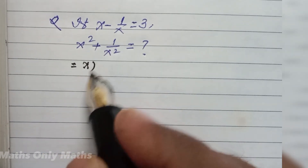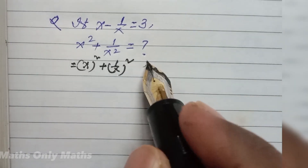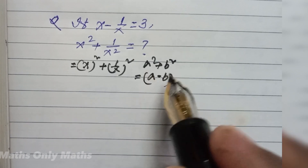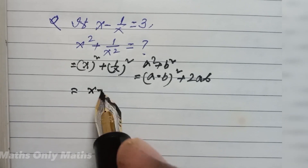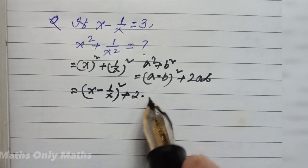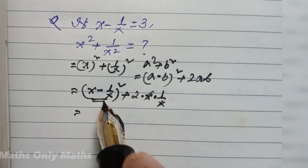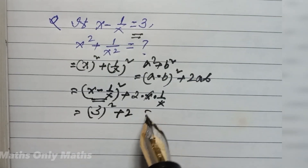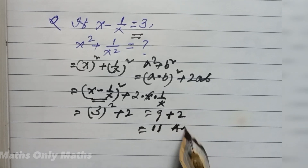x square plus 1 by x square can be written using the formula: a square plus b square equals a minus b whole square plus 2ab. So I write x minus 1 by x whole square plus 2 times x times 1 by x — the x's cancel. Now x minus 1 by x is 3, so I write 3 square plus 2, which is 9 plus 2. The answer is 11.